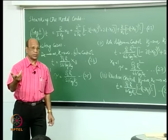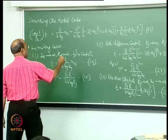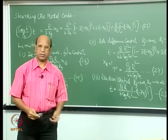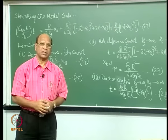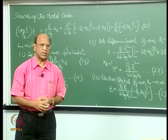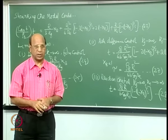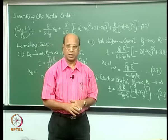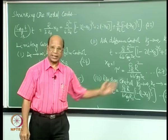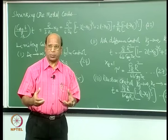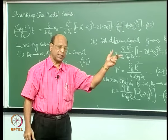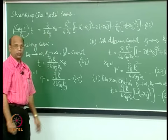Straight lines are always better than curves for experimental analysis. If you can rearrange an equation into the form y = mx + c, you get a straight line where the intercept gives one parameter and the slope gives another. As engineers you need both mathematical skill and experimental skill — a combination that is difficult but excellent to have.